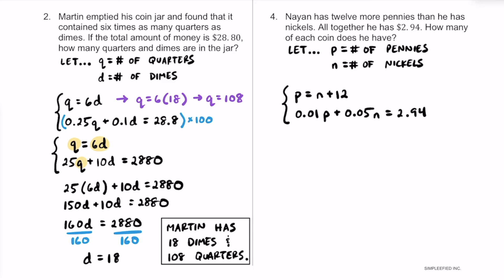To solve this, let's clear the decimals by multiplying the bottom equation by 100. We get P plus 5N equals 294. For the top equation, I'll keep it the same and use substitution.